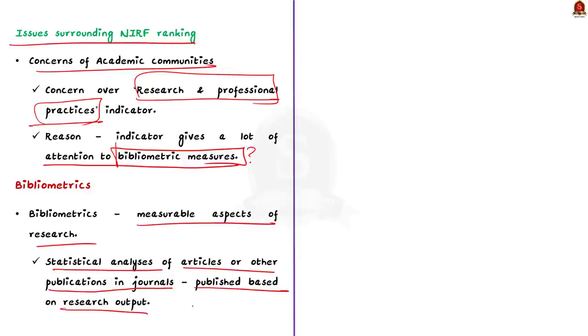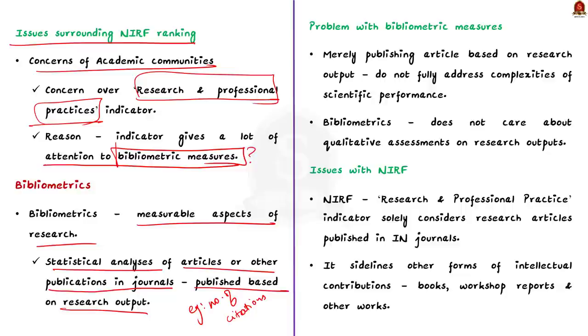Bibliometrics refers to the measurable aspects of research. To say simply, the bibliometrics are the statistical analysis of articles or other publications in journals that are published based on research output. For instance, the number of citations a paper receives is a bibliometric measure of its impact. Now, what is the problem with these bibliometric measures? Let's imagine, we have a researcher who published an article in an international journal about his research on the origin of the coronavirus. According to this research, they claim that the virus originated from chicken meat.